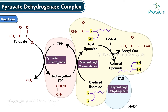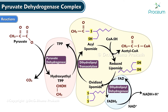Dihydrolipoyl dehydrogenase then catalyzes the conversion of reduced lipoamide into oxidized lipoamide by transferring the reducing equivalents to FAD, completing the cycle. FADH₂ in turn transfers the reducing equivalents to NAD⁺ to give NADH and H⁺. This NADH and H⁺ enters the respiratory chain to give 2.5 ATP by oxidative phosphorylation.